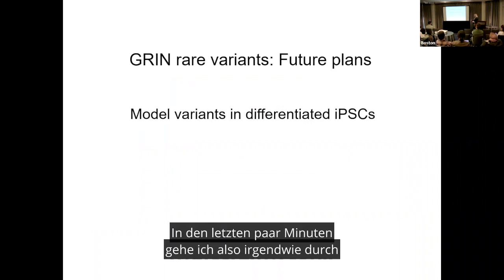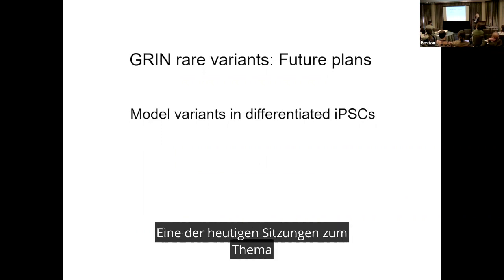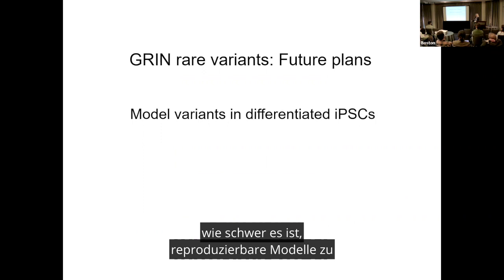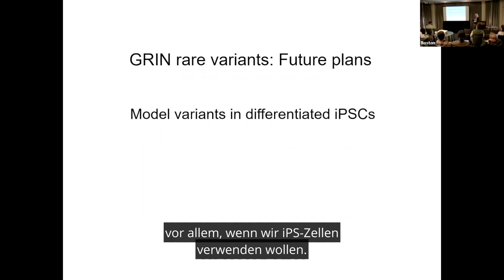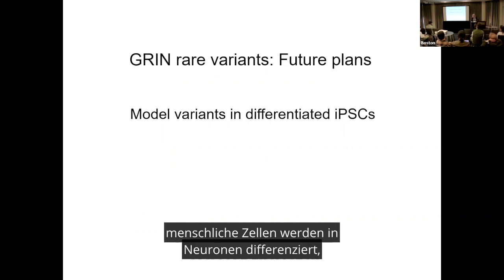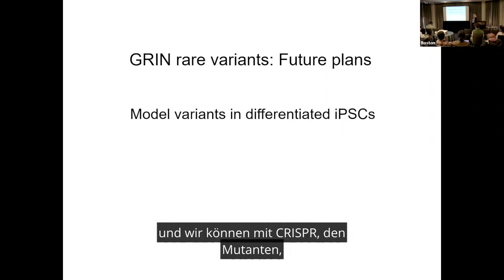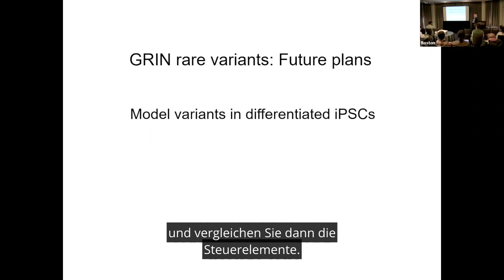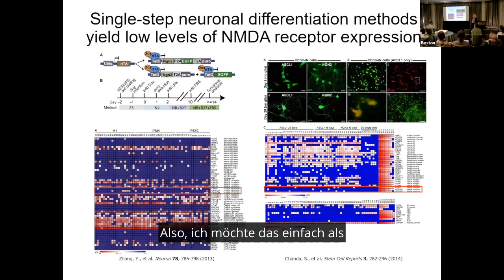In the last couple of minutes, I want to talk about how hard it is to get reproducible models, especially when we want to use iPSCs. That's really where we want to go — to start using human neurons differentiated under the endogenous promoter, knocking in mutants using CRISPR and comparing controls. There are some real problems with this that I want to put out there as something we could tackle as a community.